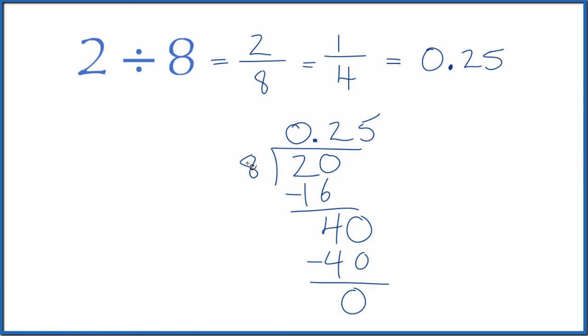And that's what we found before. 2 divided by 8 equals 0.25. This is Dr. B dividing 2 by 8. You get the fraction 2 8ths, or 1 4th, or the decimal 0.25. Thanks for watchin'.